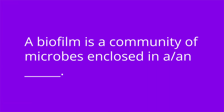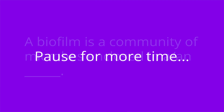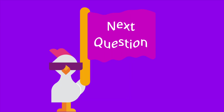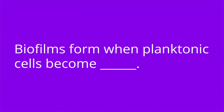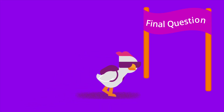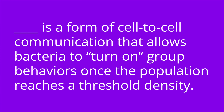It's quiz time — I have three questions for you. Question one: a biofilm is a community of microbes enclosed in a blank. The answer is extracellular polymeric substance. Question two: biofilms form when planktonic cells become blank. The answer is sessile. Question three: blank is a form of cell-to-cell communication that allows bacteria to turn on group behaviors once the population reaches a threshold density. The answer is quorum sensing.